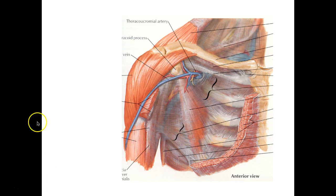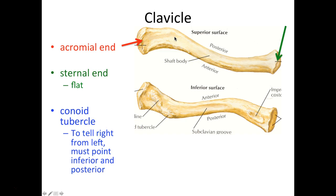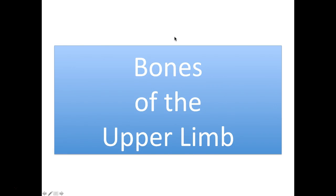Your pectoral girdle is made up of the clavicle bone right over here along with the scapula, which would be found more towards the posterior portion of your body. So let's start off with the clavicle.